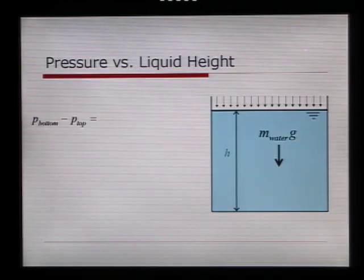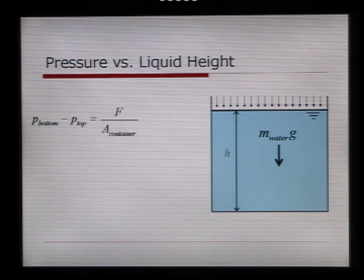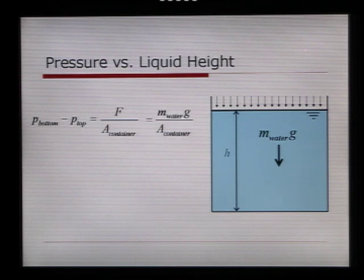But let's now look at gauge pressure. We can see in this typical water tank that the pressure between the top and the bottom, so the pressure difference, delta P, P bottom minus P top, is equal to the force divided by the area of the container. The force acting down, of course, is the mass of the water times gravity, and divide that by the area of the container.